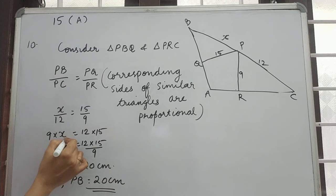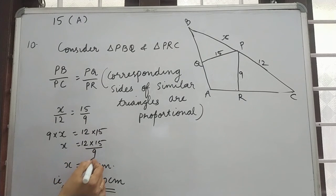Cross multiply: 9 times X equals 12 times 15. So X equals 12 times 15 divided by 9. Simplifying, 3 times 3 is 9, 5 times 3 is 15, 3 times 4 is 12, so 5 times 4 is 20 cm.